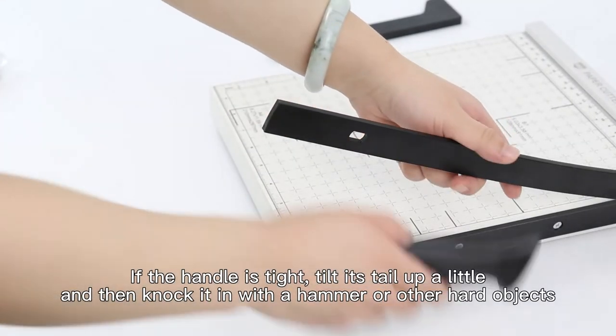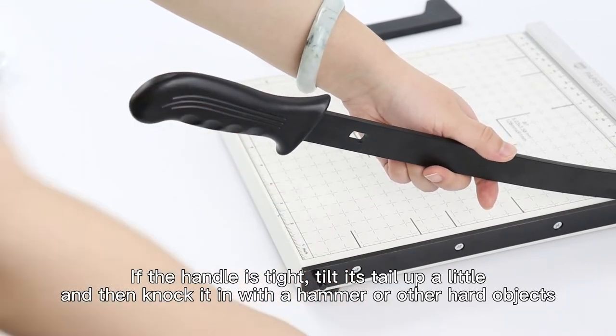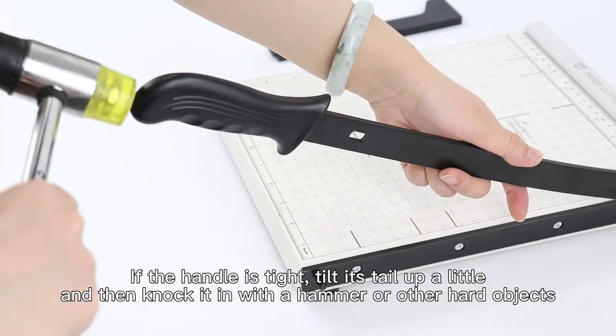If the handle is too tight, tilt its tail up a little. Then knock it with a hammer or other hard objects.